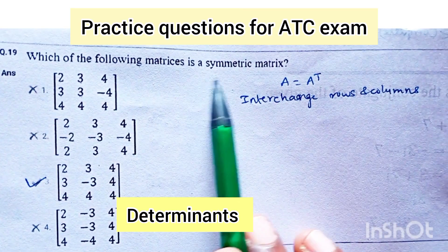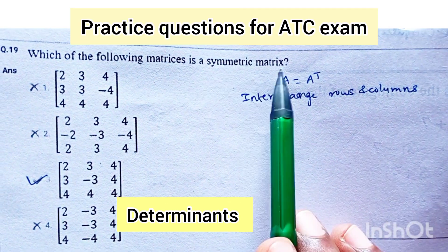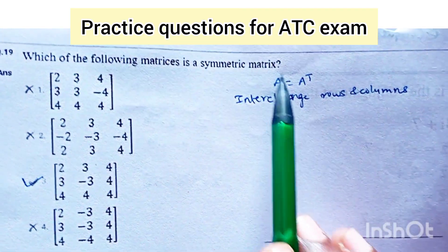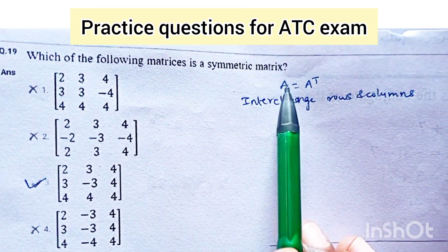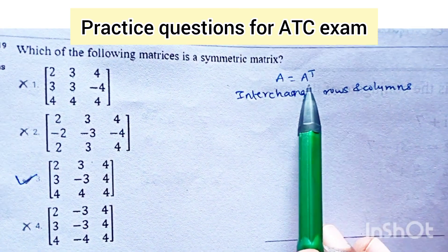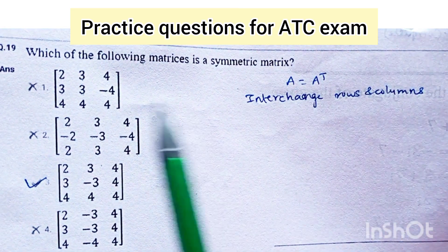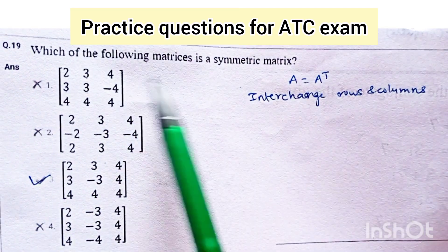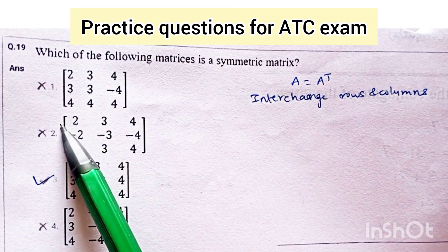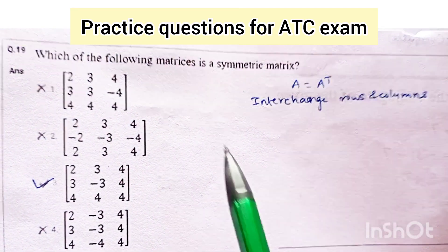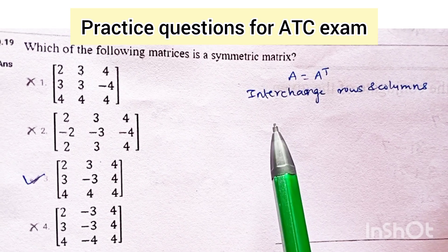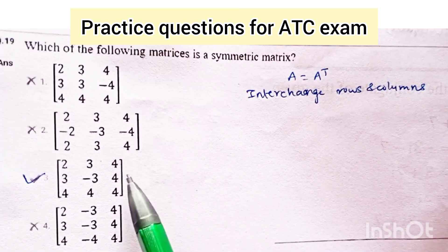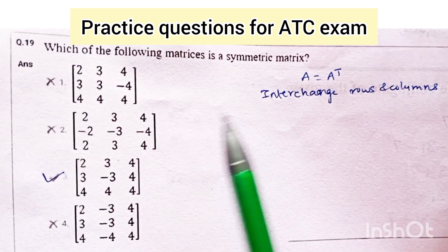Which of the following matrices is symmetric? Symmetric means A is equal to A transpose. That is, if you interchange the rows and columns of the matrix and rewrite the matrix, it will be the same as the original matrix.